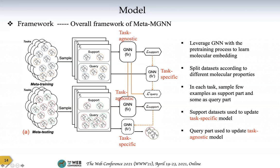For the testing part, we also proceed according to tasks. For each task, we sample a few molecules as the support part and the rest as the query part. We utilize the support part molecules to calculate the loss and build a task-specific graph neural network. Then we put the query part molecules into this network to test its performance.